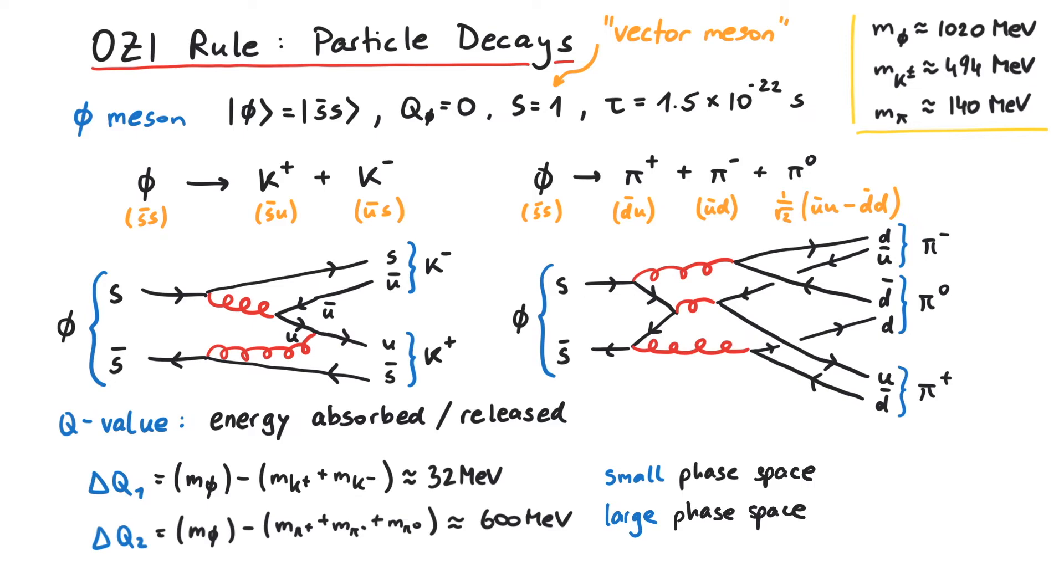On the other side, the phase space for the pions is 20 times larger. Their kinetic energies have a much larger range. Therefore, the pionic decay should be more likely to happen by a factor of 20.